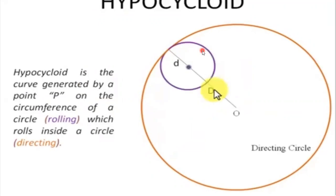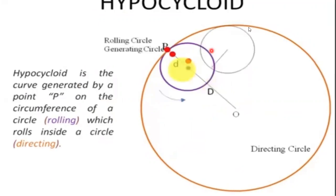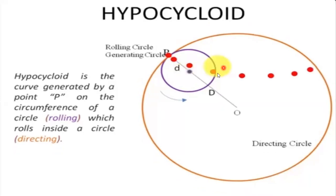The rolling circle rolls inside your bigger diameter circle, generating a path — that's why it's called the generating circle. When the circle rolls, it generates a path denoted by a dotted line with a red dot, as the smaller circle rolls over the bigger circle.